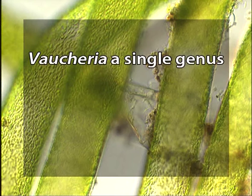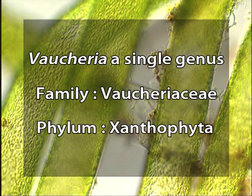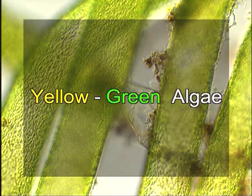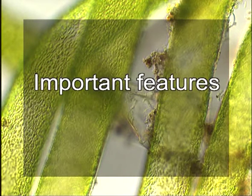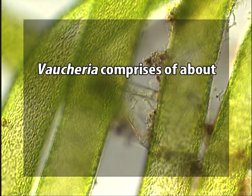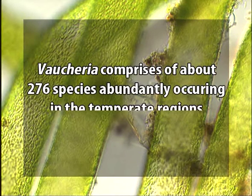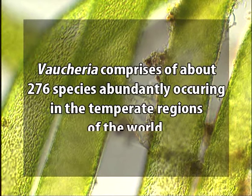Vaucheria is a single genus of family Vaucheriaceae, phylum Xanthophyta, the latter commonly known as yellow-green algae. Vaucheria presently comprises about 276 species which occur abundantly in the temperate regions of the world.